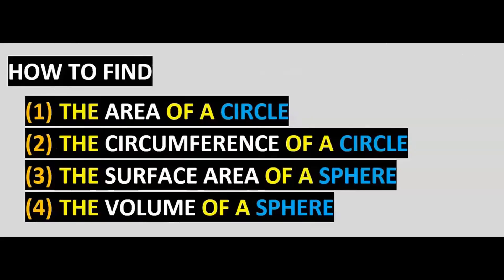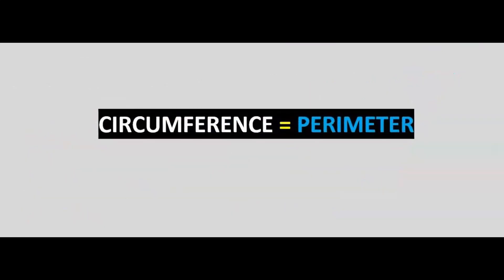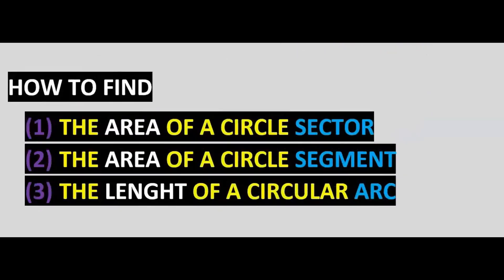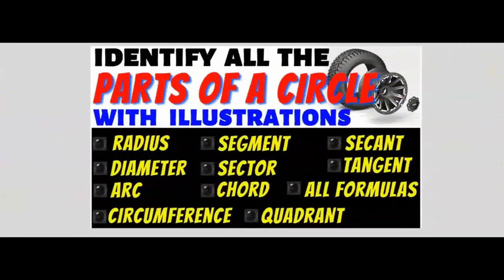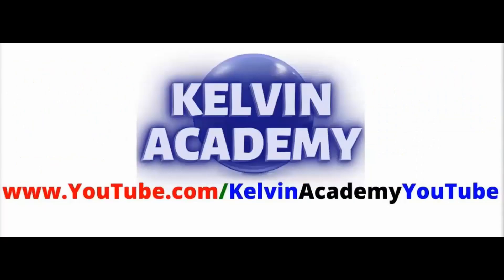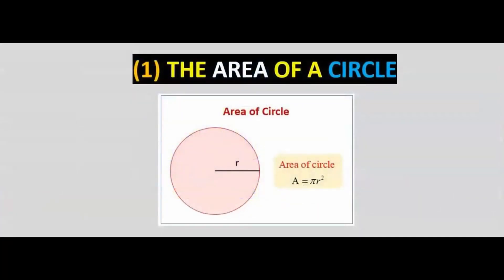By the end of this video you'll be able to find the area of a circle, the circumference of a circle, the surface area of a sphere, and the volume of a sphere. The circumference of a circle can also be known as the perimeter of a circle. In another video you will learn how to find the area of a sector, the area of a segment, and the length of an arc. You can check out the video on parts of a circle.